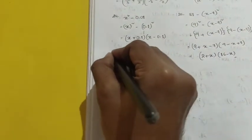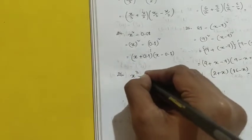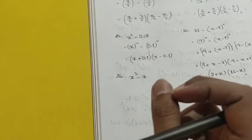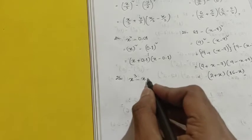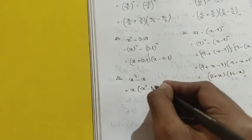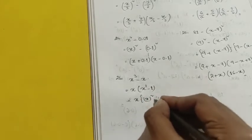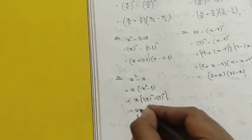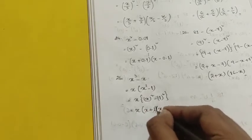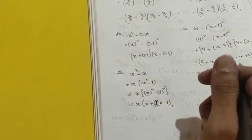Question number 26 is x³ - x. This cannot be directly written as a perfect square, but x can be taken as a common factor from both terms. Taking x common gives x(x² - 1). Now x² - 1 can be written as (x)² - (1)², which gives (x + 1)(x - 1). So the full factorization is x(x + 1)(x - 1). This is a slightly tricky and important question.